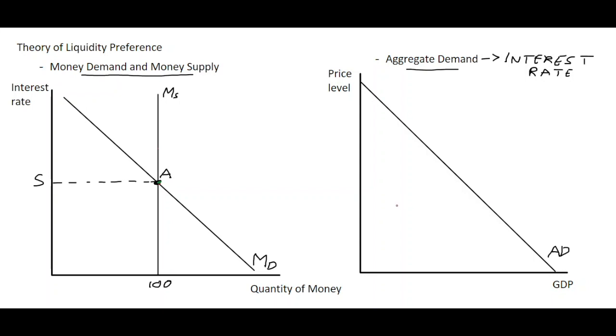So if we take a situation where we had a price level in the economy which was at three, and we have over in the money market an interest rate of 5%, that's the state of affairs in the economy. There is 100 billion of quantity of money demanded, and in this economy there is, let's say, 200 billion of output.